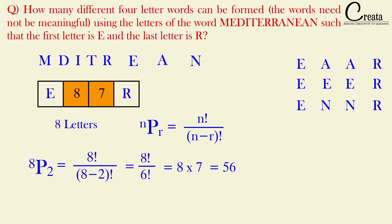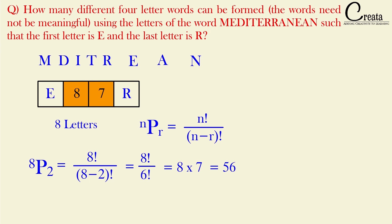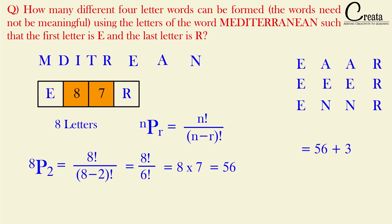We calculated 56 words using the eight distinct letters, plus the three words calculated separately using the repeated-letter pairs. So our final answer is 56 + 3 = 59. This is the answer to the question — slightly tricky and lengthy, but the logic is straightforward.